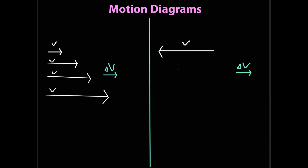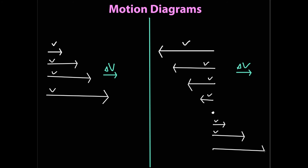Now consider the situation where the velocity vector points to the left but the change in velocity vector points to the right. Since they are in opposite directions, each time the change in velocity vector is added, the velocity vector gets shorter — not longer. Eventually the velocity reaches zero and the object comes to a stop. But if the change in velocity vector still exists, velocity continues to change to the right, so the object then begins moving to the right and speeds up. You see this same behavior when rolling a ball up a hill — it slows, stops, then speeds up rolling back down — or when throwing something straight up into the air.